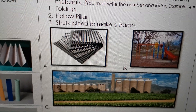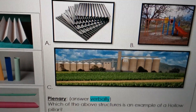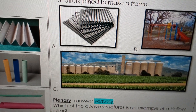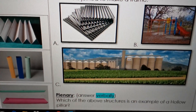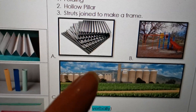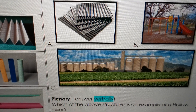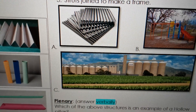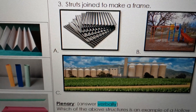Three questions, a very short activity. Then a plenary - we answer verbally. Which of the above structures is an example of a hollow pillar? Yes, you are right - it's the silos, it's a hollow pillar. But is it a circular pillar, a triangular pillar, or a square pillar? It is a circular pillar. Well done.